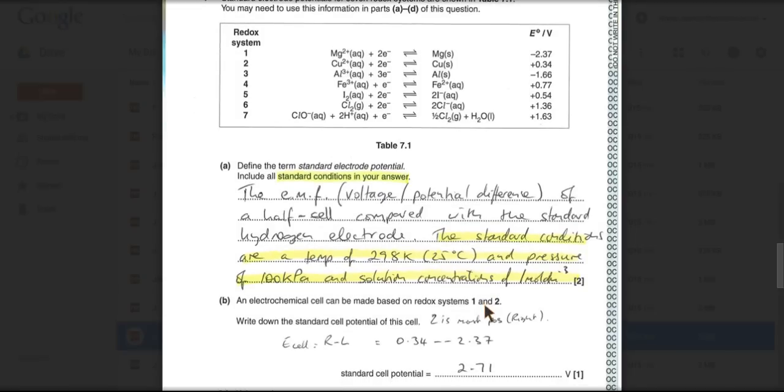Electrochemical cell based on redox systems 1 and 2, what is the standard electrode potential for the cell? So easiest thing to do is just more positive minus less positive. And so therefore, it's going to be 0.34 minus minus 2.37. So that's why I've got the numbers there, 2.71.